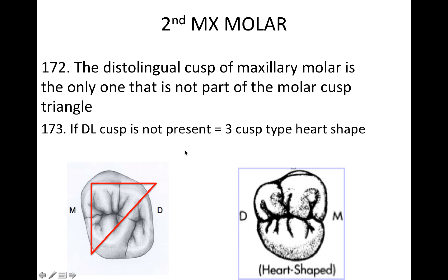Now we're going to get into the second maxillary molar. Same idea as the first molar — the distal lingual cusp is not part of the cusp triangle. As you move posteriorly, the distal cusp gets progressively smaller, and sometimes on the second molar you won't even have a distal lingual cusp. If that's the case, you'll have a three-cusp type heart shape, and you see that a lot with the third molar.